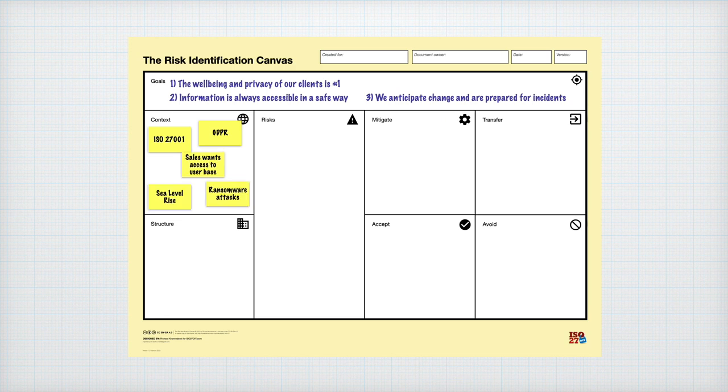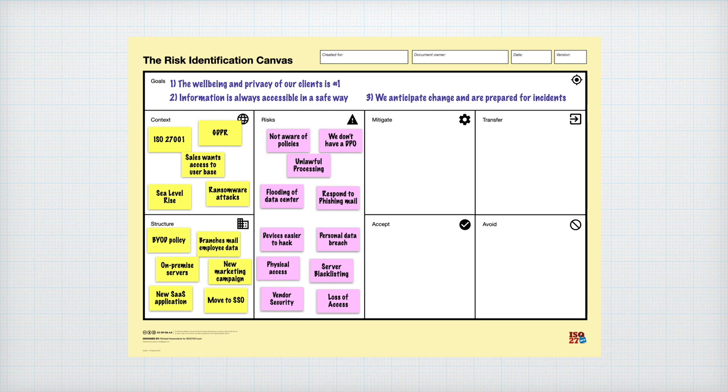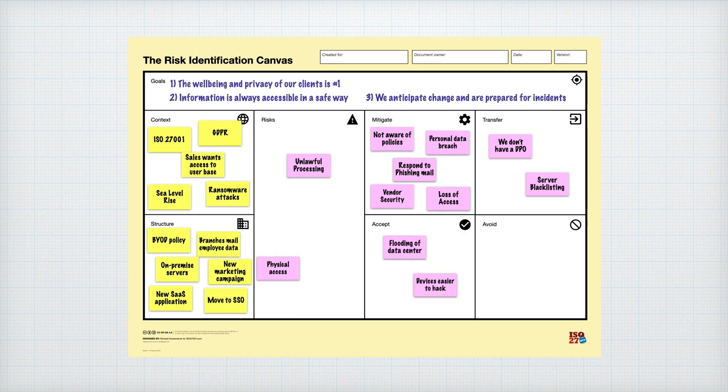Next, they discuss risk sources in their work processes, tooling and changes that have recently occurred or will be implemented. They identify relevant risks and decide if a risk is to be mitigated within their own team, should be transferred to another team or organization, can be accepted or should be avoided. The team then moves the risks that they need to mitigate to the Controls Specification Canvas.